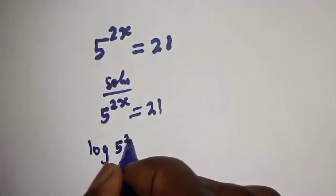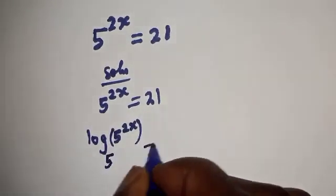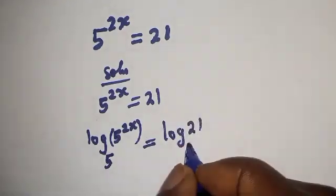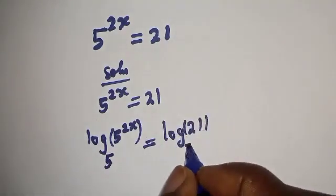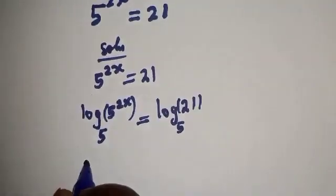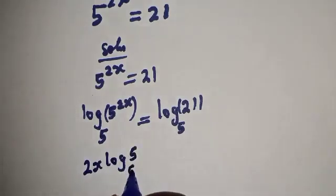We have log base 5 of 5 raised to power 2x is equal to log base 5 of 21. Now let's see, this is 2s log base 5 of 5.